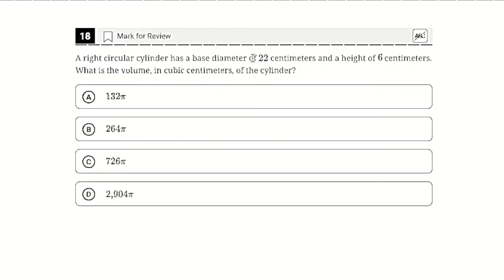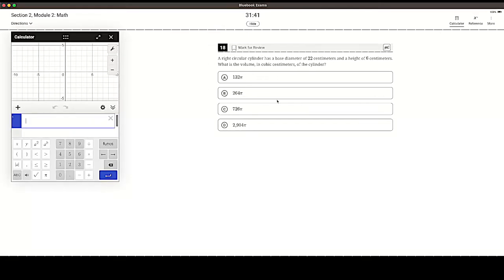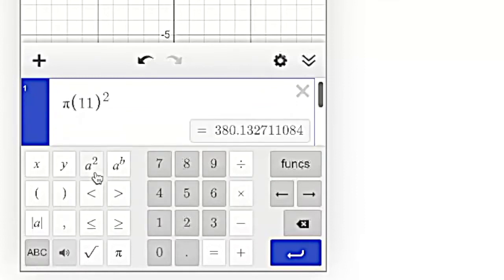I just have to plug it in. So pi r squared times height, my diameter is 22, so my radius is 11, and it's going to be pi times 11 squared times the height, which is 6. You can grab Desmos here, pi times 11 squared times 6.